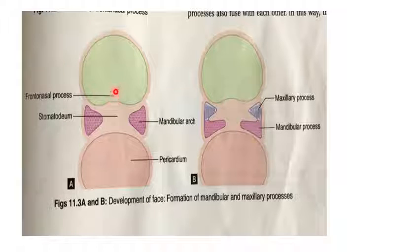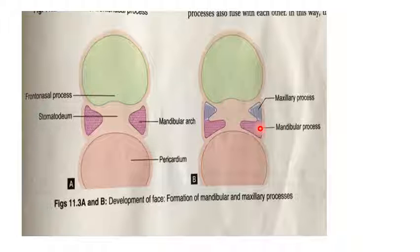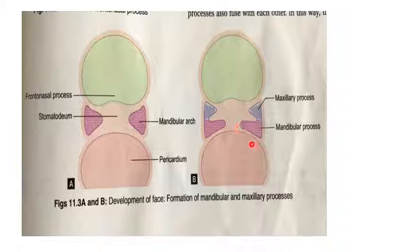The diagram shows the frontonasal process, the pericardium, and the two mandibular arches forming the stomodium or primitive mouth. From the mandibular arch, one process arises — the maxillary process — which grows cranially and medially. The remaining part grows medially and slightly upward and is known as the mandibular process. This primitive mouth or stomodium is bounded above by the frontonasal process, below by the pericardium, and on each side by the maxillary and mandibular processes.